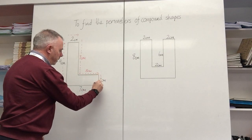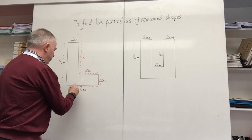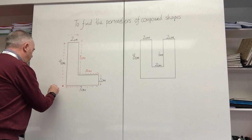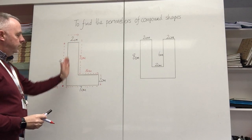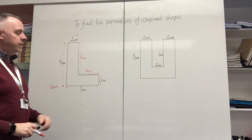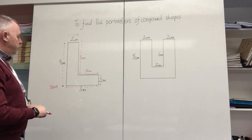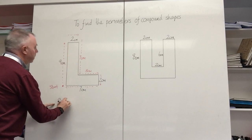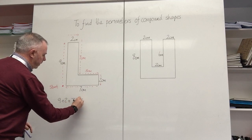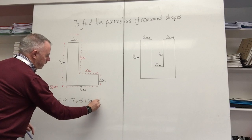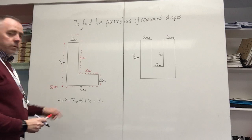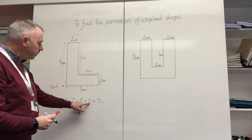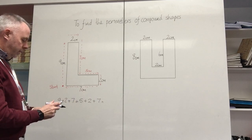Then I continue my journey around the shape — I've got two centimeters followed by seven centimeters, and then I get back to my starting point. So now I've gone around the outside of this letter L and I've got all the measurements I need. The calculation I need to do is 9 + 2 + 7 + 5 + 2 + 7, all in centimeters. So: 9 + 2 = 11, + 7 = 18, + 5 = 23, + 2 = 25, + 7 = 32.